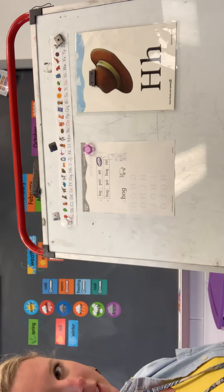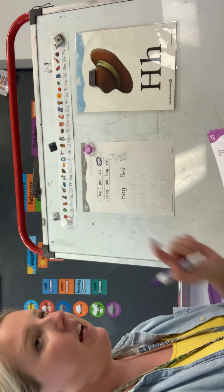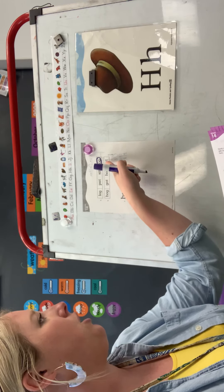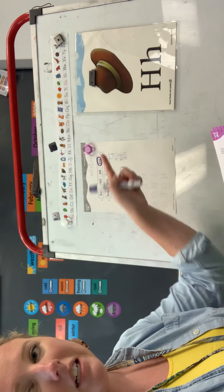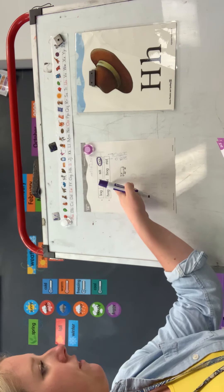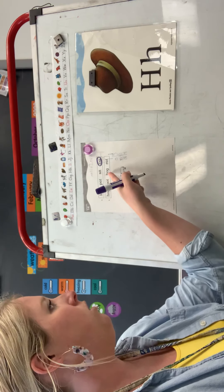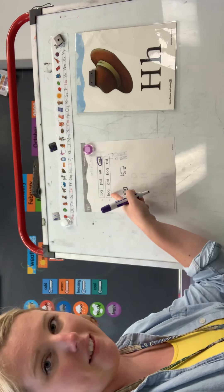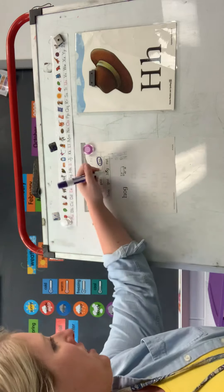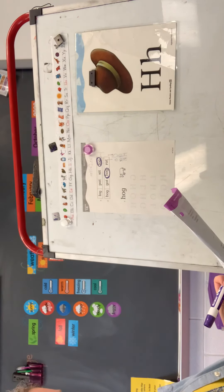Now, put your finger on number six. We see H-O-G. Can you find another H-O-G within these words? Let's look at the first one. G-O-T. Is that the same? No. H-O-G. Is that the same? Yeah. So, we're going to circle H-O-G.